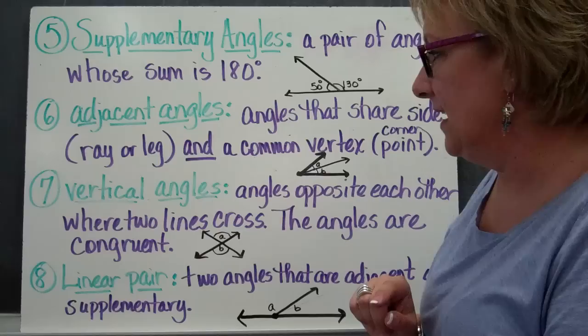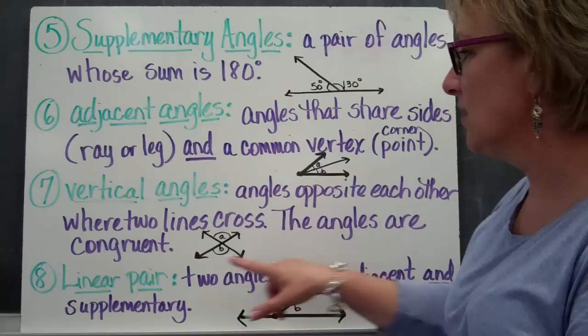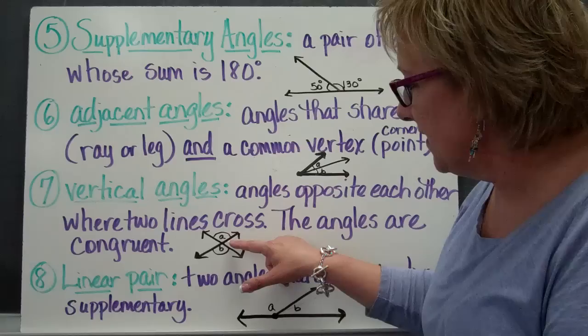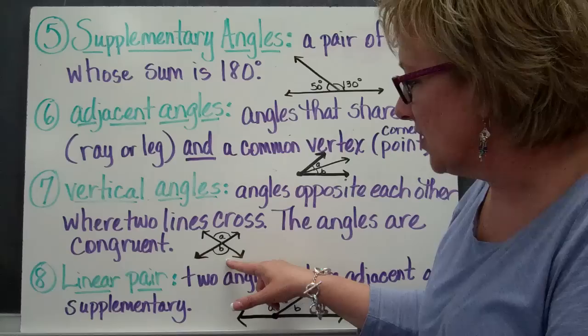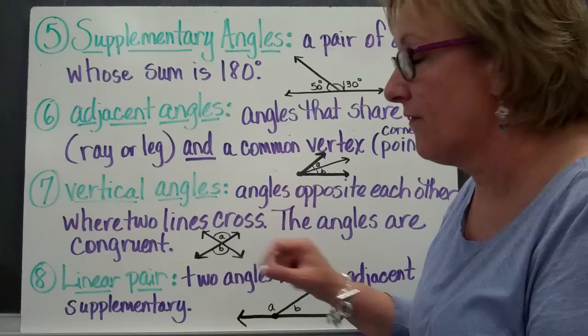Vertical angles are angles that are opposite each other where two lines cross, and the angles are congruent, meaning that they are the same. If you look at this, it looks like two little fish kissing — they come up and they kiss right here at the point. A and B are kissing each other, therefore their angle measurements are going to be the same, and they are called vertical angles.